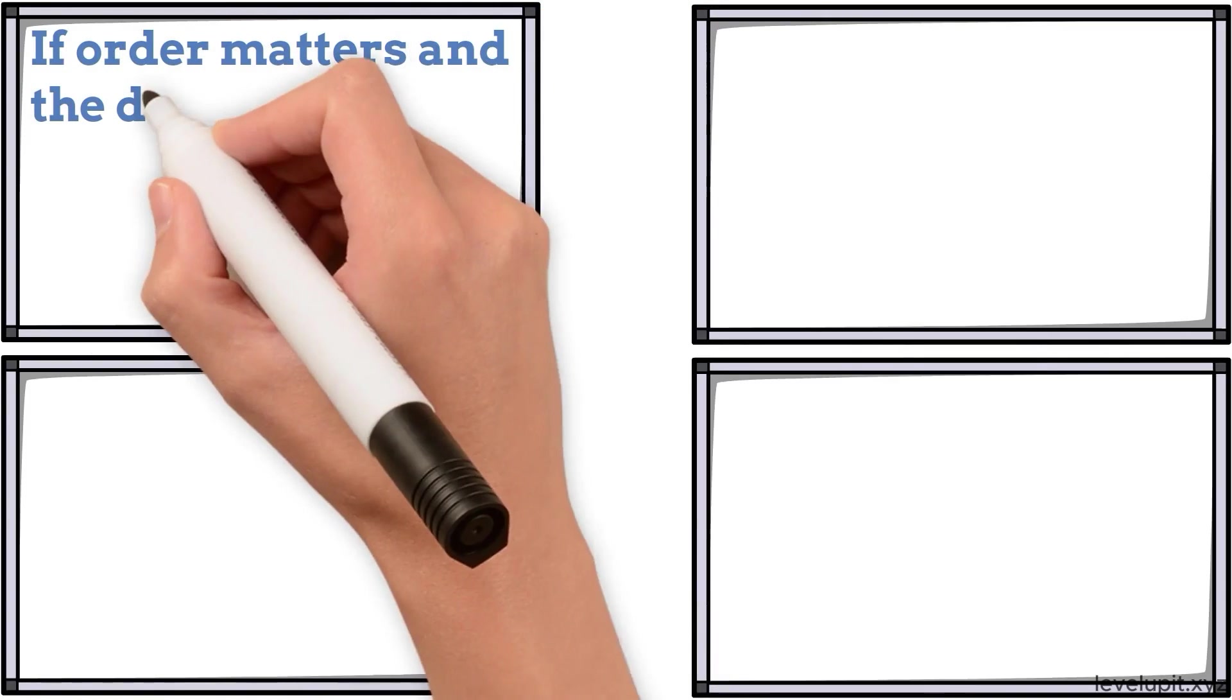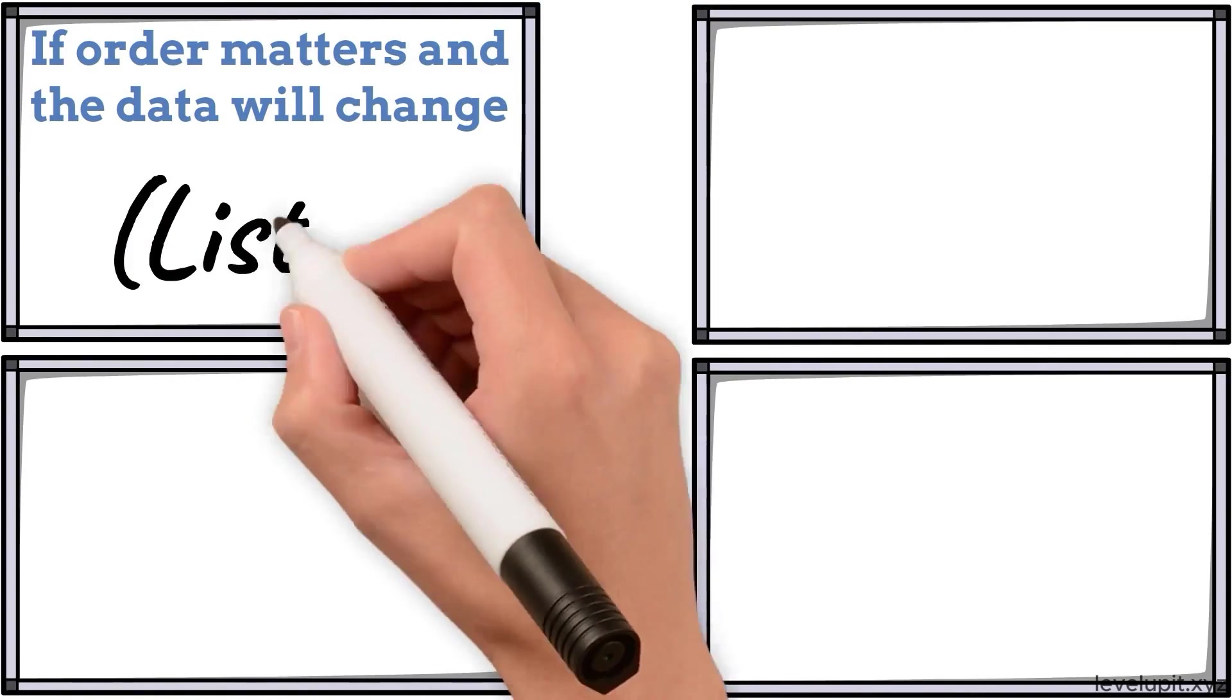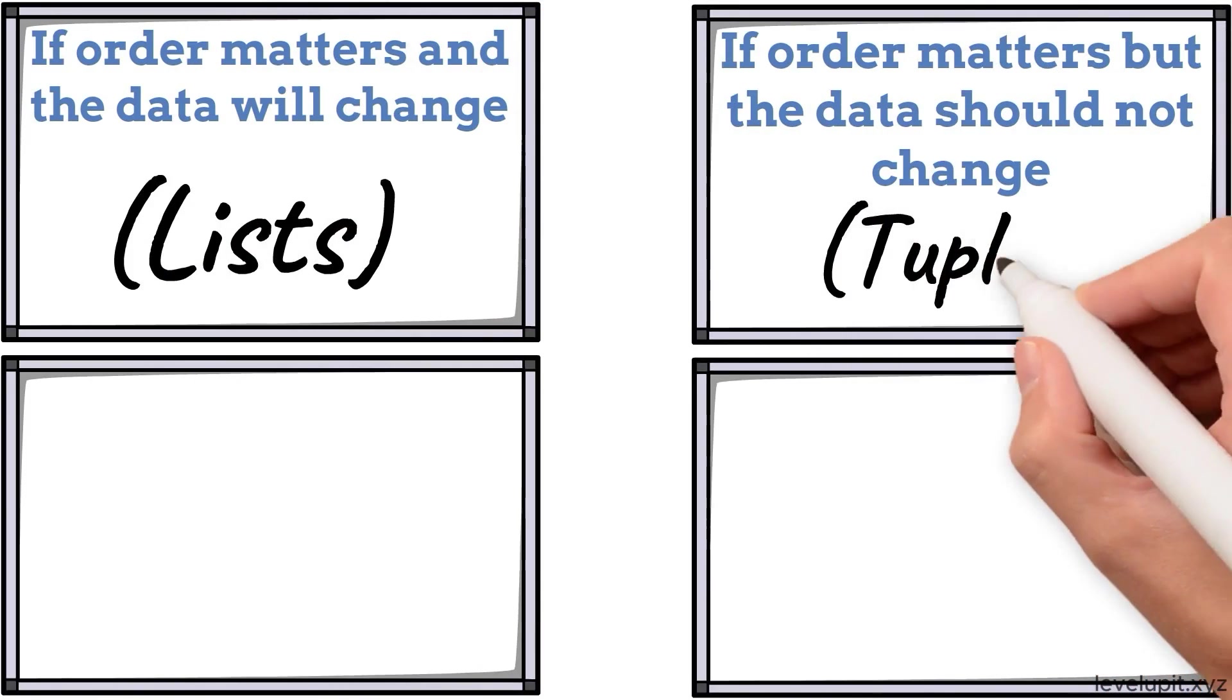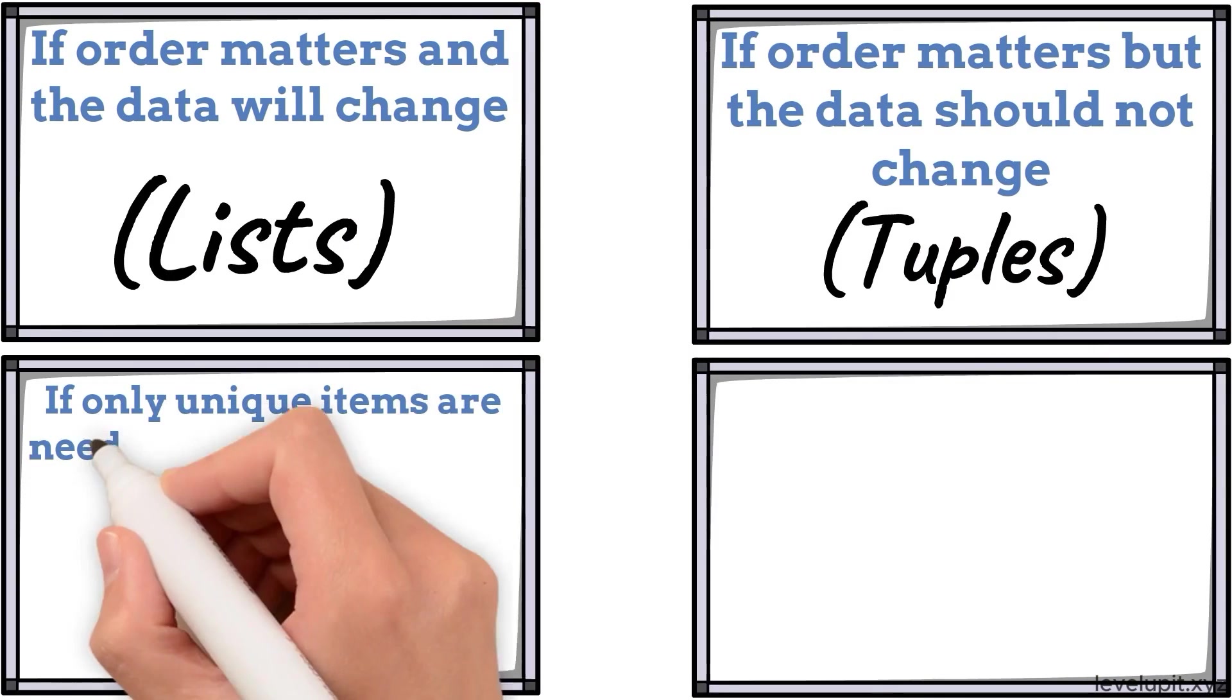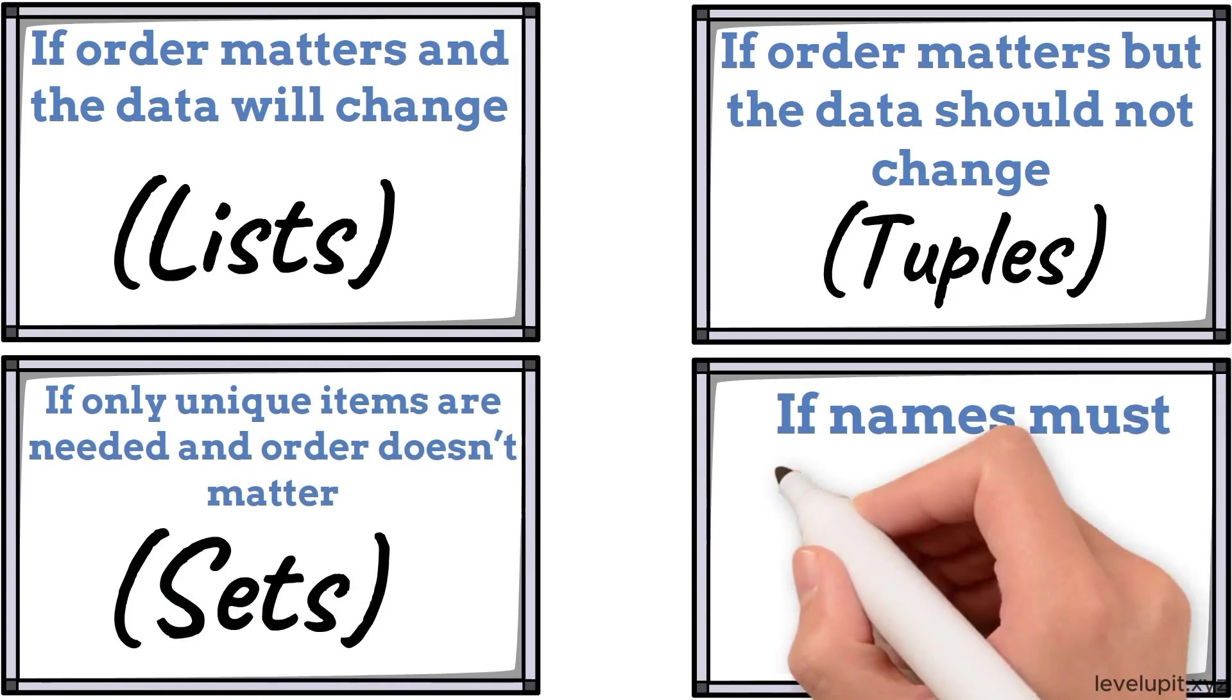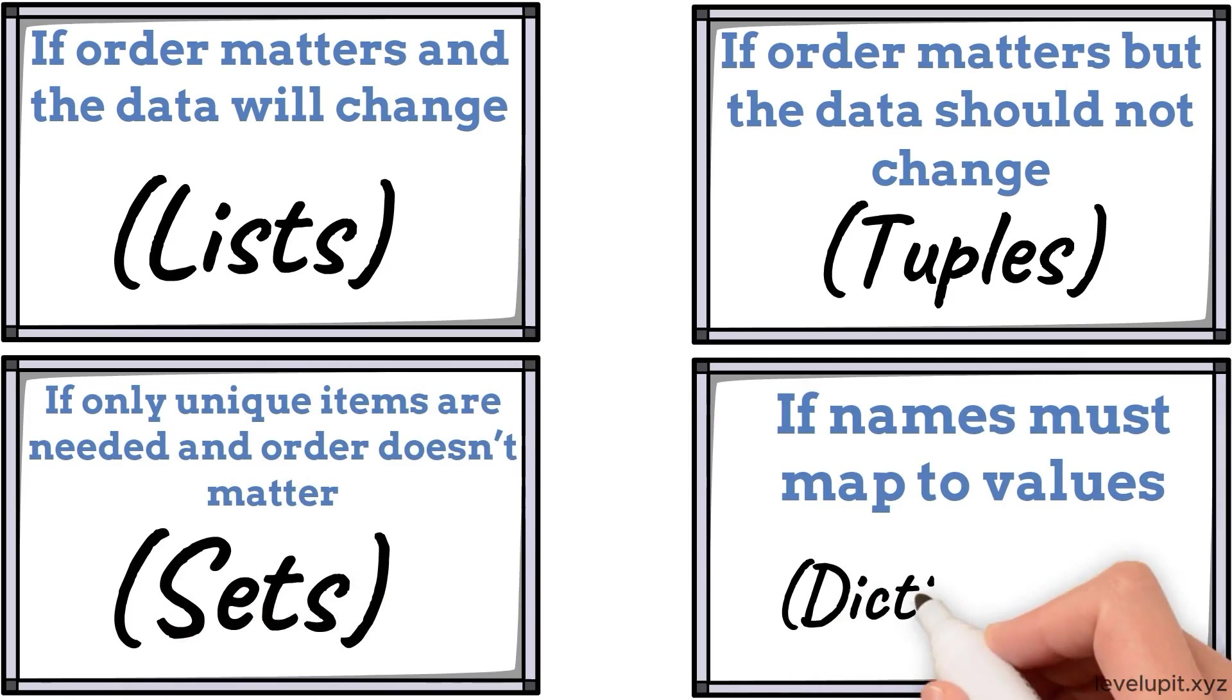If order matters and the data will change, lists are great. If order matters but the data should not change, tuples fit. If only unique items are needed and order doesn't matter, sets win. If names must map to values, dictionaries are perfect. With just these rules, most choices become simple.